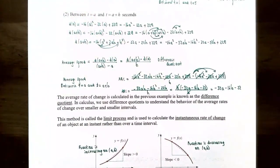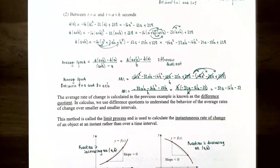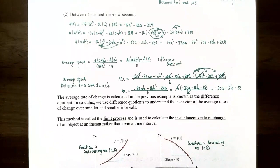The expression we just calculated is known as a difference quotient — a difference in the numerator divided as a quotient. In calculus, difference quotients are used to understand average rates of change over smaller and smaller intervals through a limit process, which calculates the instantaneous rate of change at any single instant in time.